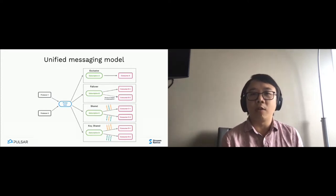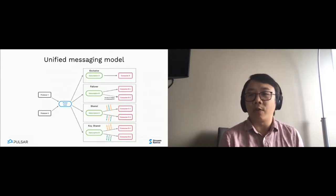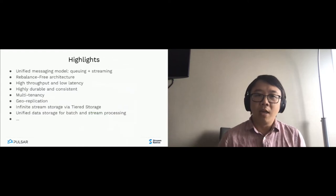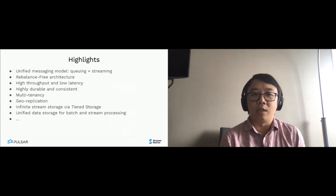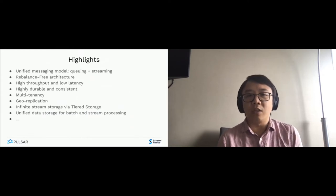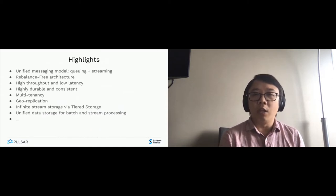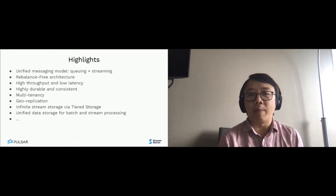So you can actually use Pulsar for both workloads — supporting worker queues that were originally served by RabbitMQ, and also supporting streaming use cases originally served by Kafka. Pulsar has many features including a rebalance-free architecture, high throughput and low latency messaging, built-in multi-tenancy, geo-replication, and integration with compute and data processing engines like Flink for unified batch and streaming.